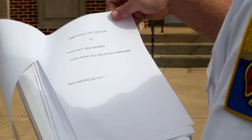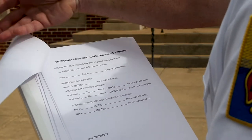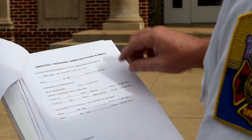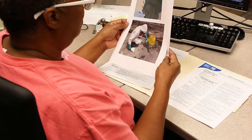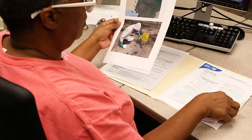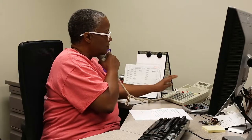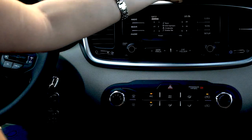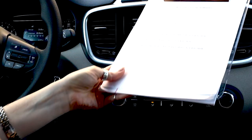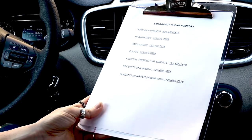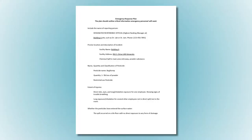An Emergency Response Plan, or ERP, can help prevent an emergency from becoming a catastrophe. Make sure there is a coordinator with the authority to make emergency decisions. Make all necessary calls and take care of required paperwork. Post emergency phone numbers and contacts in the office, shop, and truck. The plan should outline critical information emergency personnel will need.